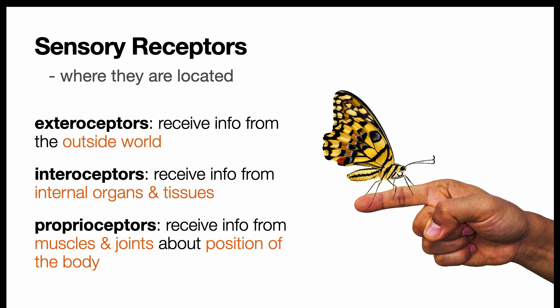And proprioceptors receive information from muscles and joints about the position of the body, which you would use, for example, if you needed to touch your nose with your finger.